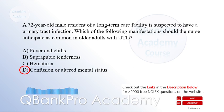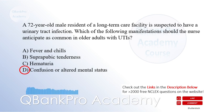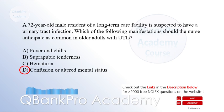Fever and chills, suprapubic tenderness, and hematuria may also be present but are not as consistently seen in older adults with UTIs. The nurse should be vigilant for subtle changes in mental status in elderly patients and consider a UTI as a possible underlying cause.